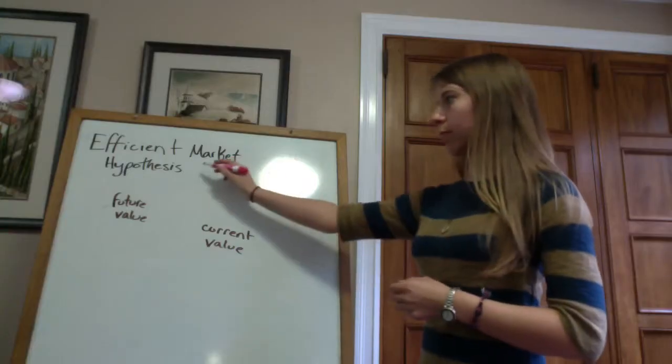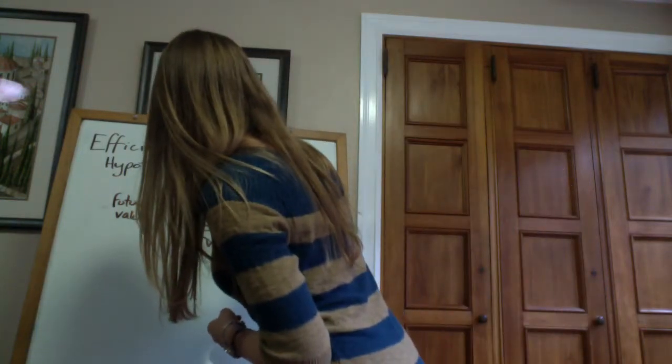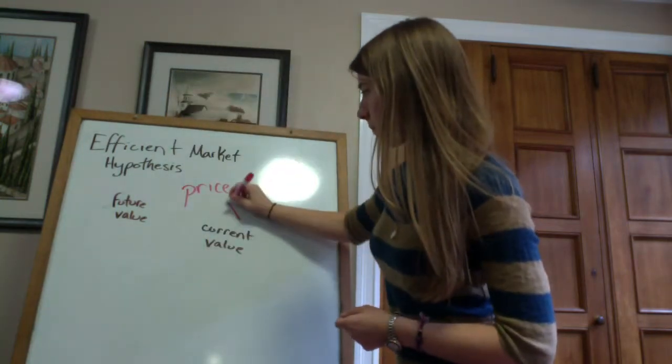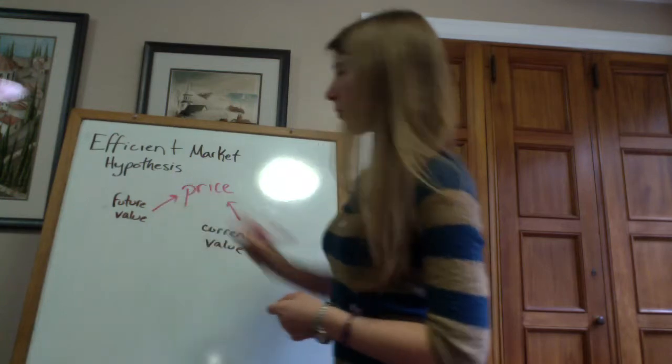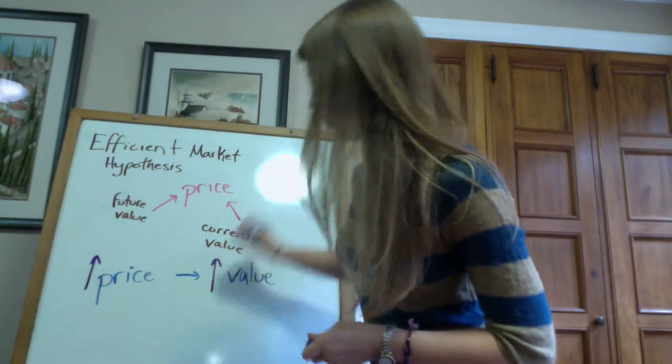The efficient market hypothesis states that stock market efficiency causes existing stock prices to always incorporate and reflect all relevant information so that stocks trade at their fair value. This is saying that prices reflect information about the present and future value of a good. In the case of stocks, a stock price will reflect the stock's present and future value to potential investors.